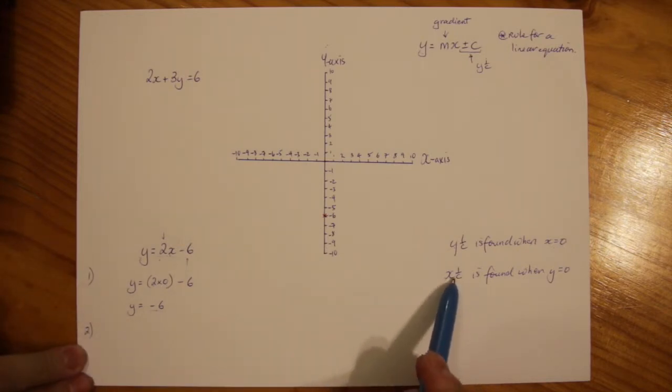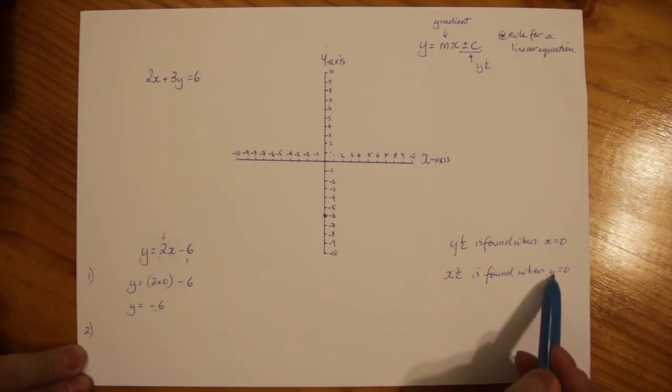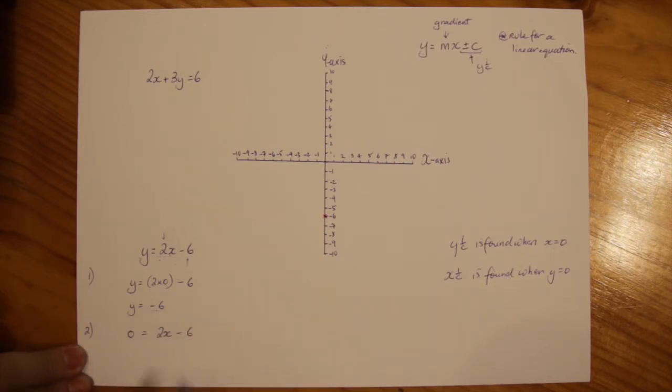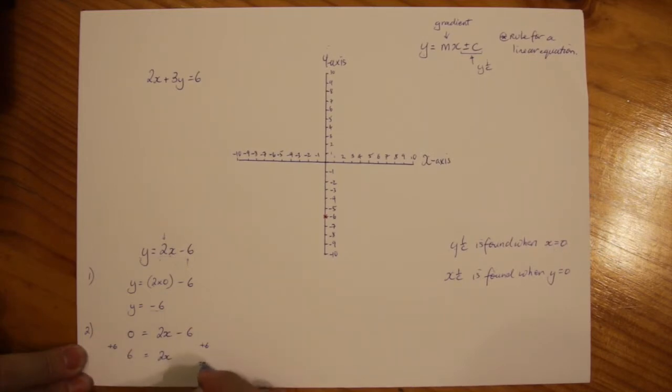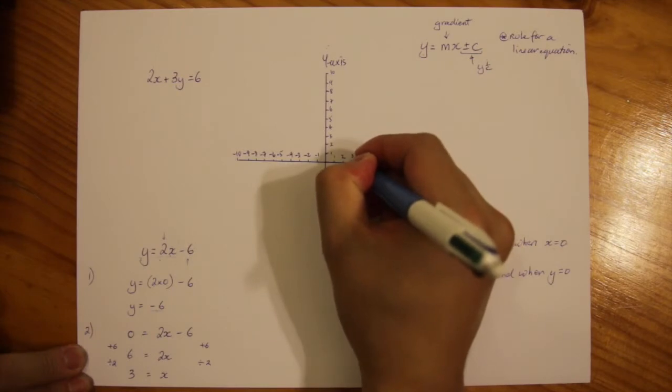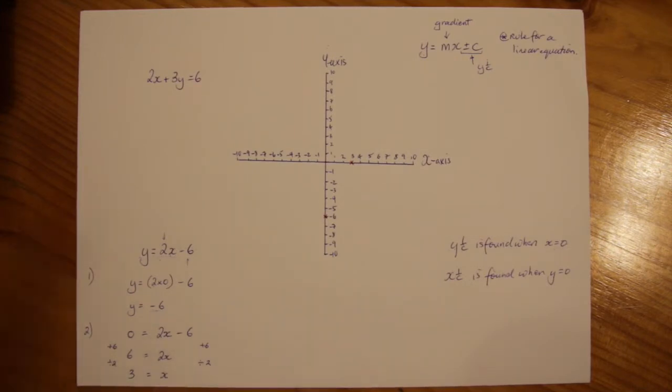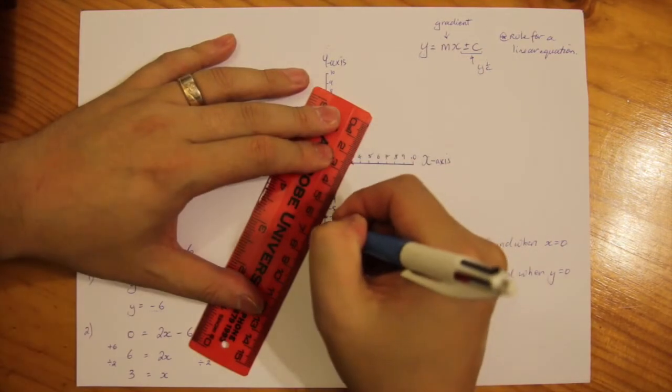Second step is we're going to find what the x-intercept is and we're going to substitute y for 0. So instead of y, we're going to make that 0 equals 2x minus 6. We're going to solve for x by adding 6 to both sides and then we're going to divide both sides by 2. So x will equal 3. So when y equals 0, x equals 3. That's going to be my x-intercept and all I need to do now is join those two points.